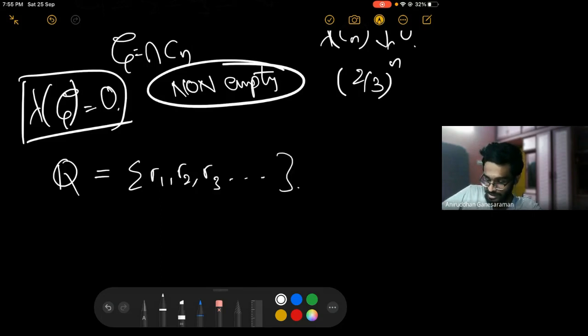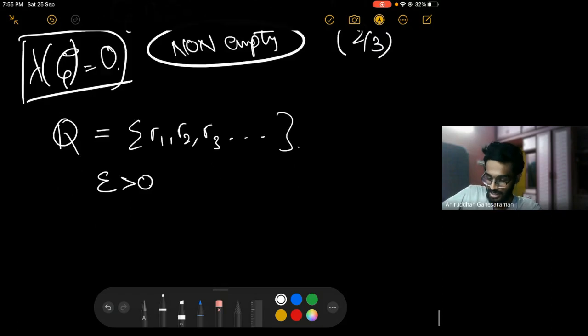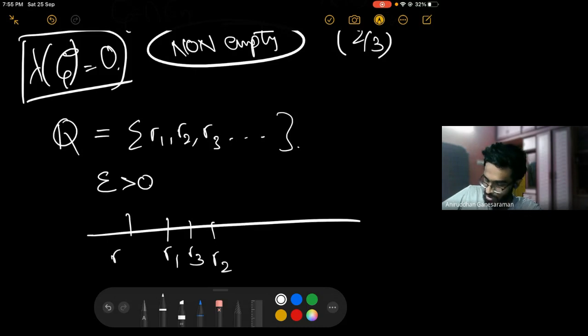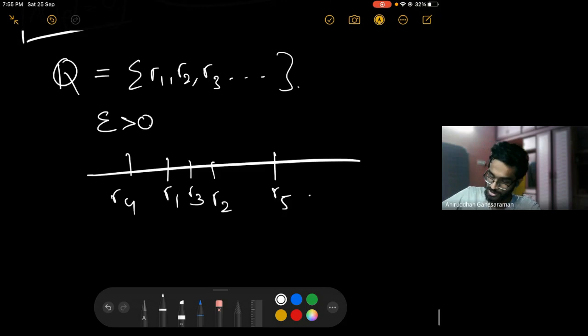Let's fix some epsilon greater than zero. Then you have r1, r2, r3, r4, r5. I'm just not drawing it in order so you don't get the wrong picture.